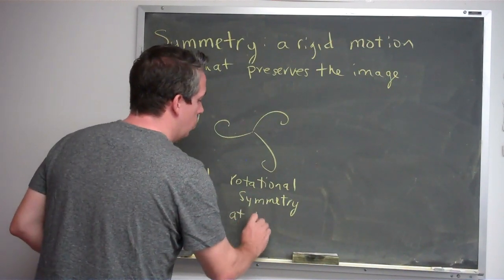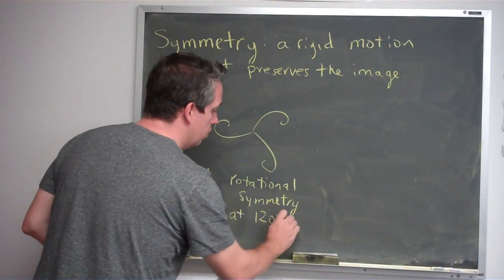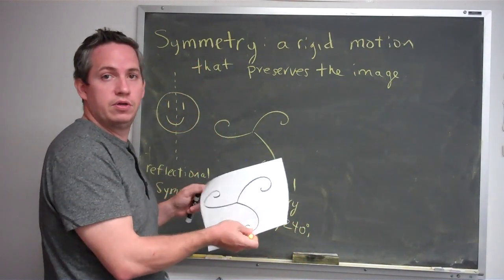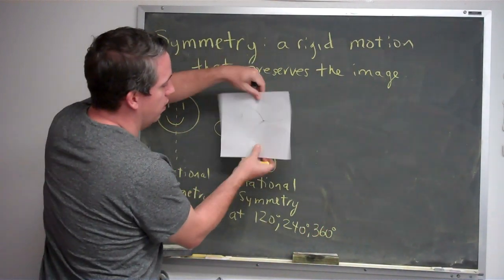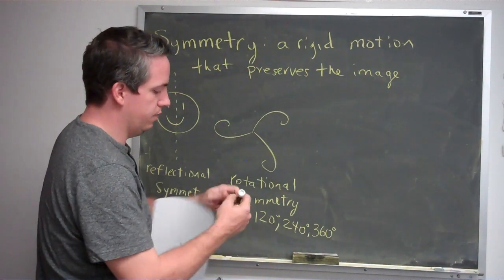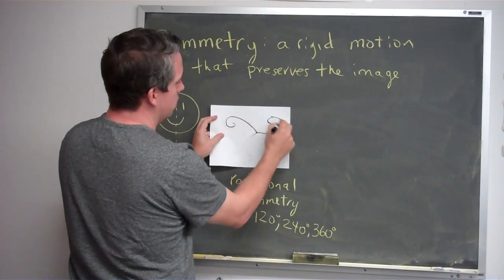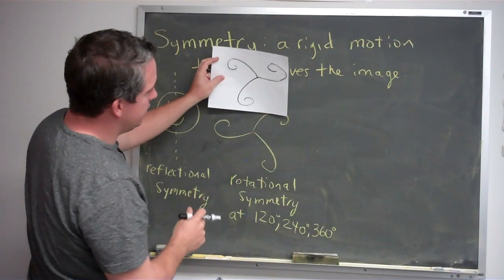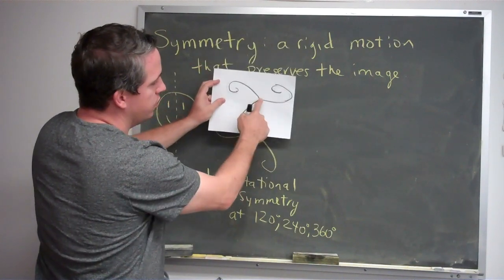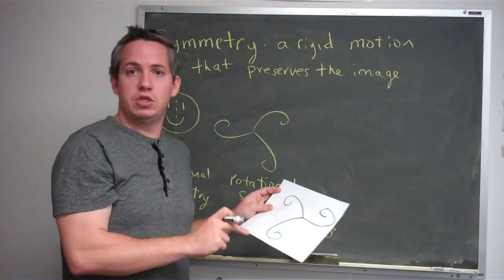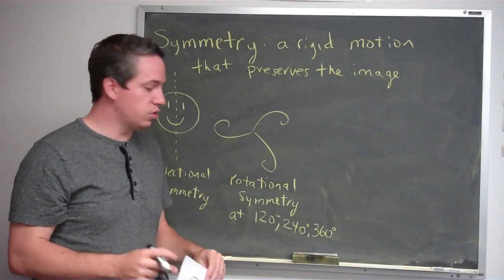This shape has rotational symmetry at 120 degrees. If I go another 120 degrees, I reach 240 degrees and get the same image back. And at 360 degrees I get the exact same image back. This does not have reflectional symmetry though, because when I reflect it, I end up with something where the wing parts go clockwise going inward, whereas the reflected version has them going counterclockwise. So there's no line of reflection that makes this work. It has rotational symmetry at 120, 240, and 360 degrees only.